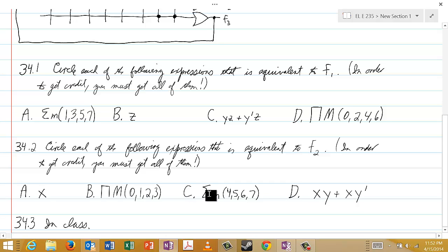In C, you have the sum of the min terms, 4, 5, 6, 7. And in D, we have XY or XY'.